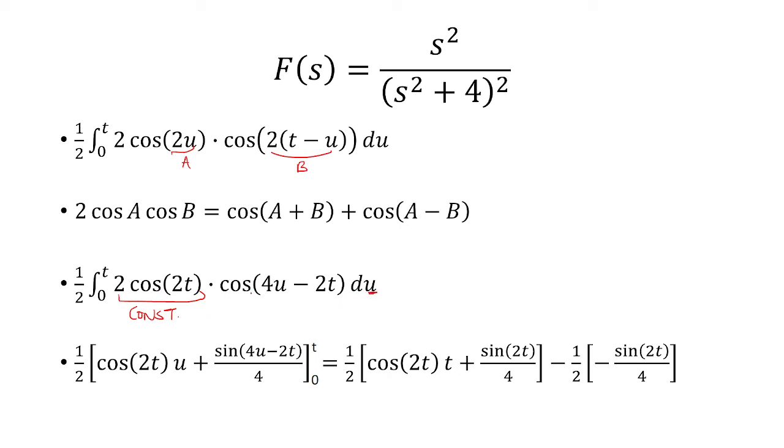So this is a constant times cosine 4u minus 2t. So the only thing you're really taking the antiderivative of is cosine 4u minus 2t, which the antiderivative of cosine is sine, and then the chain rule says divide by 4.